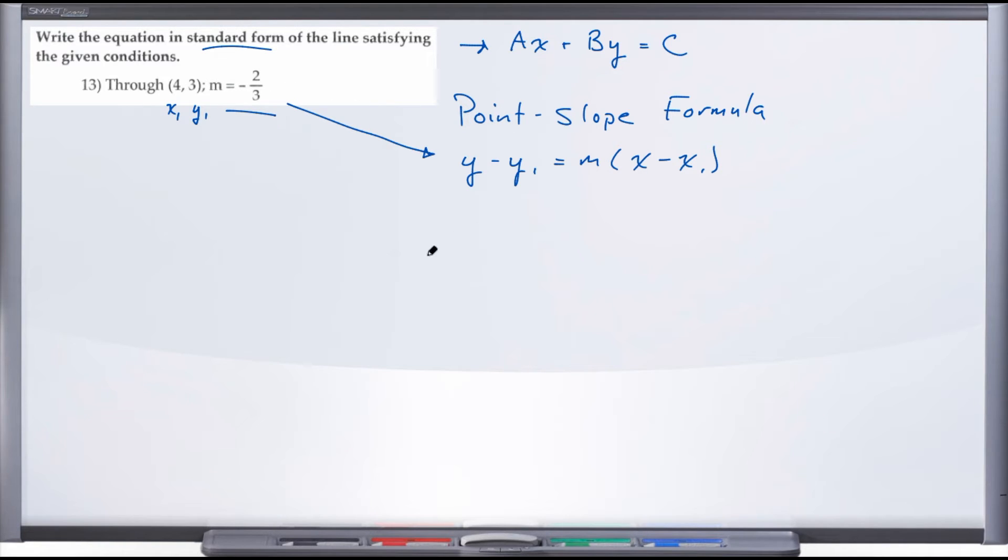Let's go ahead and do that. So we have y - y₁—well, what's y₁? In this case it's 3—equals m—well, what's m? Negative two-thirds—times the quantity (x - x₁). Well, what's x₁? Four.